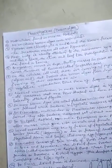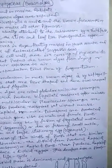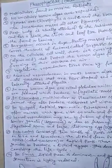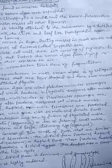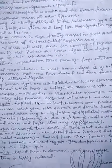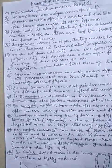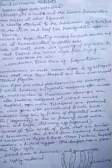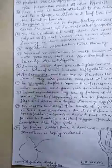In Dictyota, haploid non-motile tetraspores are produced after meiosis, which give rise to male and female plants. Sexual reproduction may be isogamous — fusion of flagellated motile similar gametes — or oogamous, involving fusion of a small motile flagellated sperm and a large stationary egg.